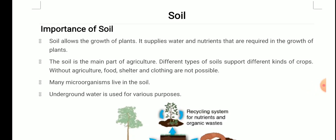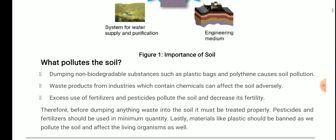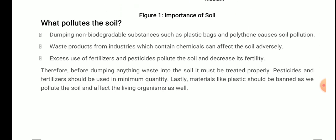It is the main part of agriculture, and we discussed that different types of soil support different kinds of crops. Many microorganisms also live in the soil, and underground water is used for various purposes. Soil is a medium for plant growth, an engineering medium, a habitat for soil organisms, and a recycling system for nutrients and organic wastes. We also discussed what pollutes the soil — dumping non-biodegradable substances such as plastic bags and polythene causes soil pollution. Waste products from industries which contain chemicals can affect the soil adversely, and excess use of fertilizers and pesticides pollute the soil and decrease its fertility.